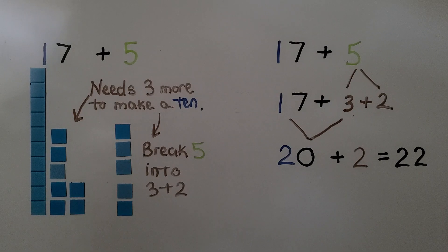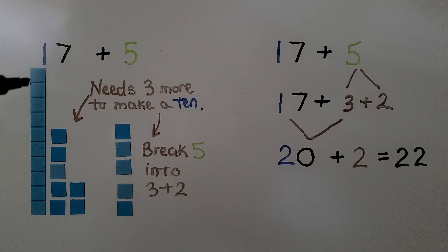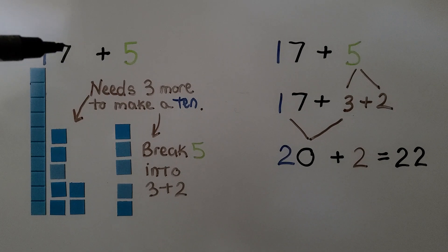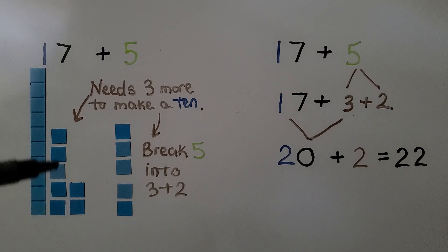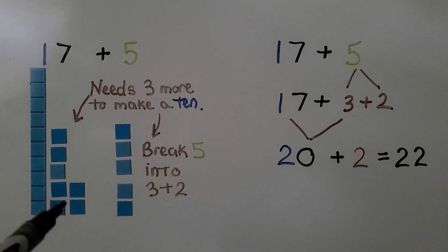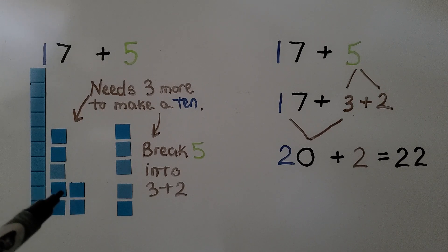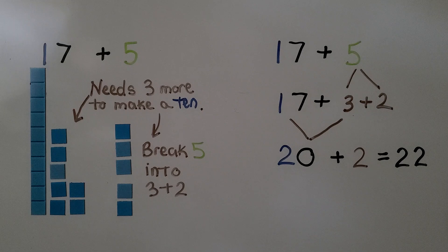Here we have 17 plus 5. We have 1 ten, 7 ones. We ask ourselves what these 7 ones need to make a ten. They need 3 more to make a ten.